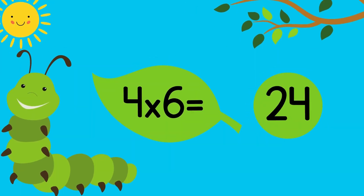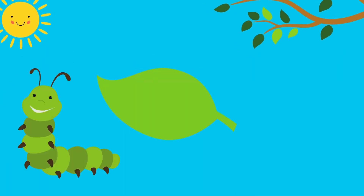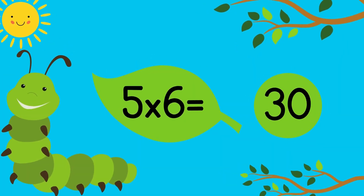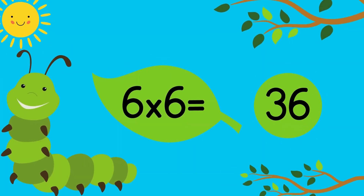4 times 6 equals 24. 5 times 6 equals 30. 6 times 6 equals 36.